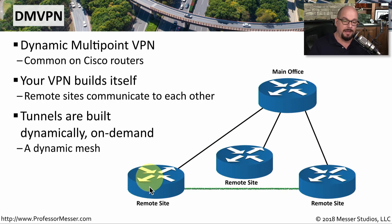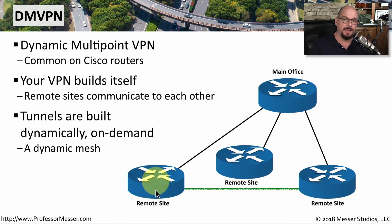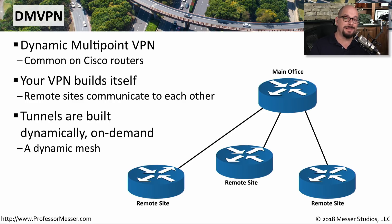But with DMVPN, those sites can dynamically build a connection between each other, send the communication they'd like to send, and then tear down the connection. This means that any of the remote sites can send data to any of the other remote sites in the most efficient way possible.